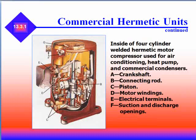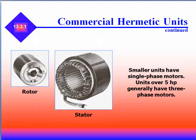The inside of a four-cylinder welded hermetic compressor used for air conditioning, heat pumps, and commercial condensers contains a crankshaft, a connecting rod, a piston, a motor winding, electrical terminals, and suction and discharge openings. Smaller units have single phase; units over five horsepower generally have three-phase motors.